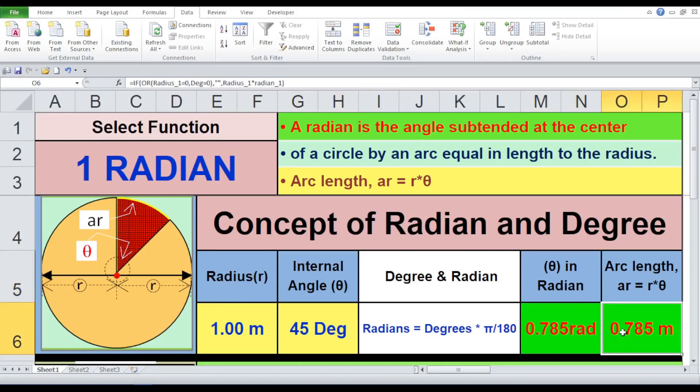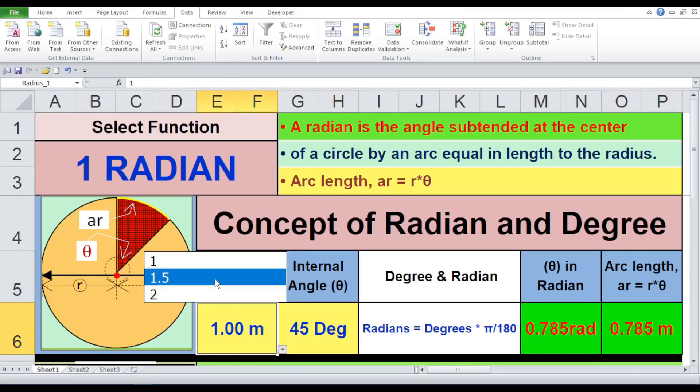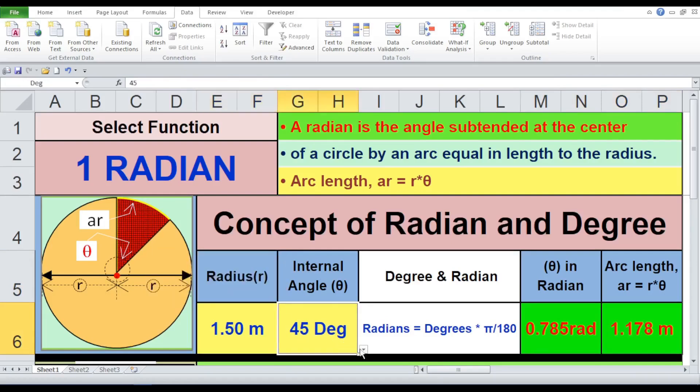Trial 3. Radius 1.5 meters, angle 60 degrees, theta equals 1.047 radians, arc length equals 1.571 meters.